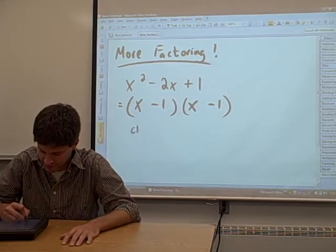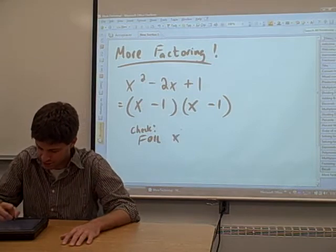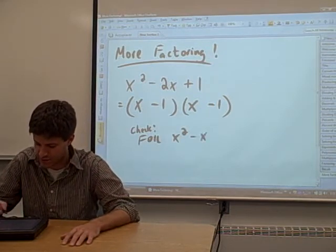We can check this, of course, just with a foil. Multiply the first two terms, we get x squared. Multiply the outer two terms, you get a minus x.